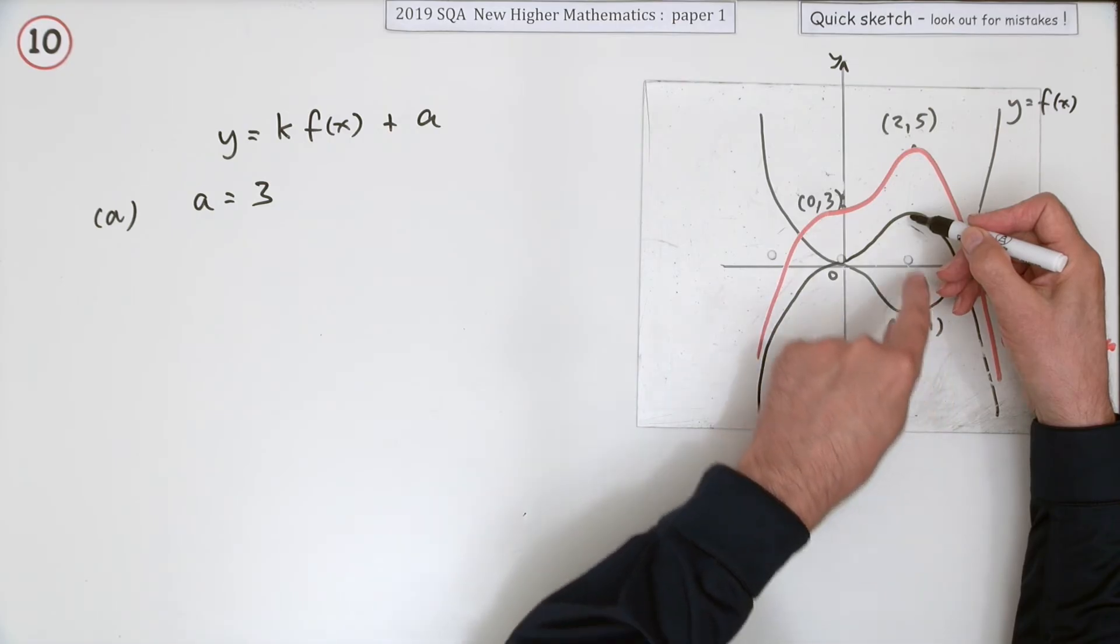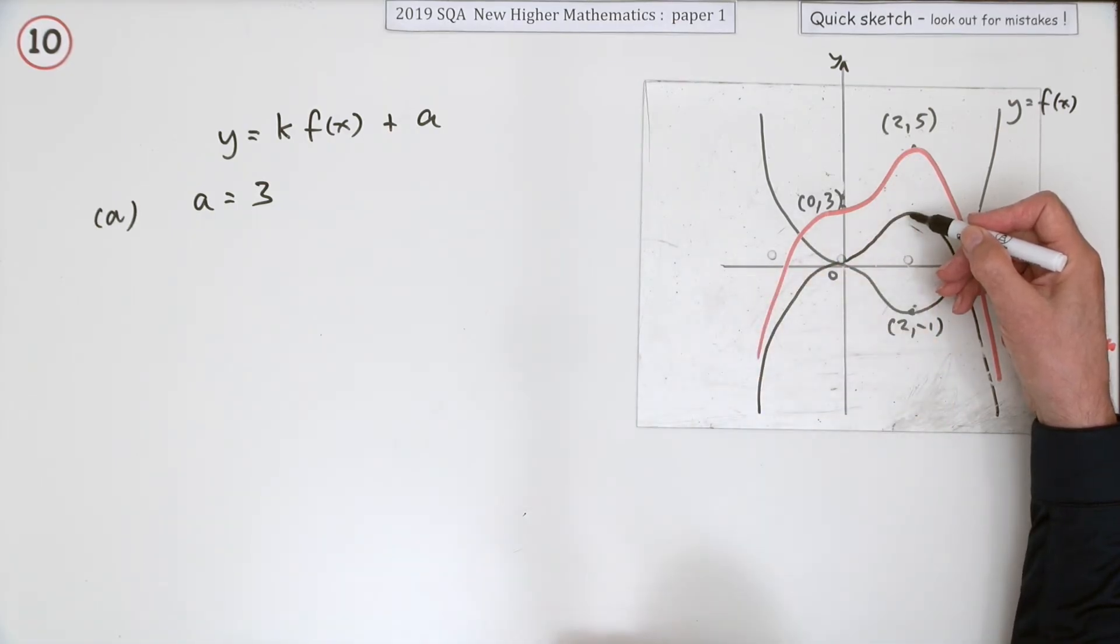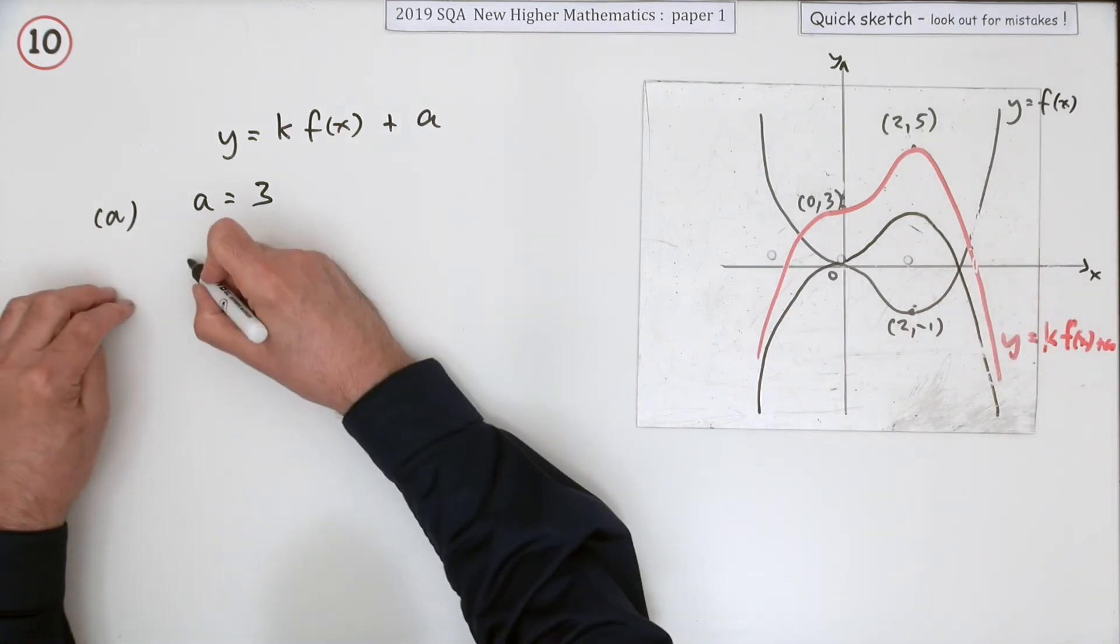Taking three down from five puts you at two. Negative multiplying negative one would take it to a one. So that must have been doubled. So k must be negative two, or you could say this what's happened.